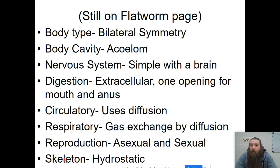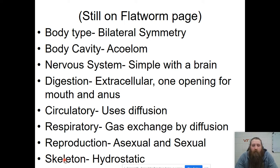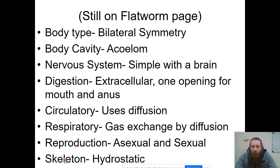They have bilateral symmetry, so we expect to see cephalization in these organisms. They are acoelomates, so they have no true body cavity. They have simple nervous systems, but brains are present. They have extracellular digestion. Just like cnidarians, they only have one opening in their body cavity. They use diffusion for their circulatory and respiratory systems. They can reproduce sexually or asexually, and they also have a hydrostatic skeletal system.